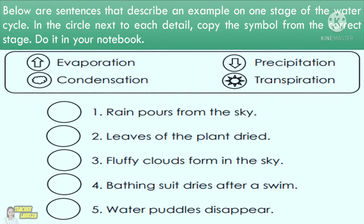For our third activity, below are sentences that describe an example of one stage of the water cycle. In the circle next to each detail, copy the symbol from the correct stage. Do it in your notebook. 1. Rain pours from the sky. 2. Leaves of the plant dry. 3. Fluffy clouds form in the sky. 4. A bathing suit dries after a swim. 5. Water puddles disappear.